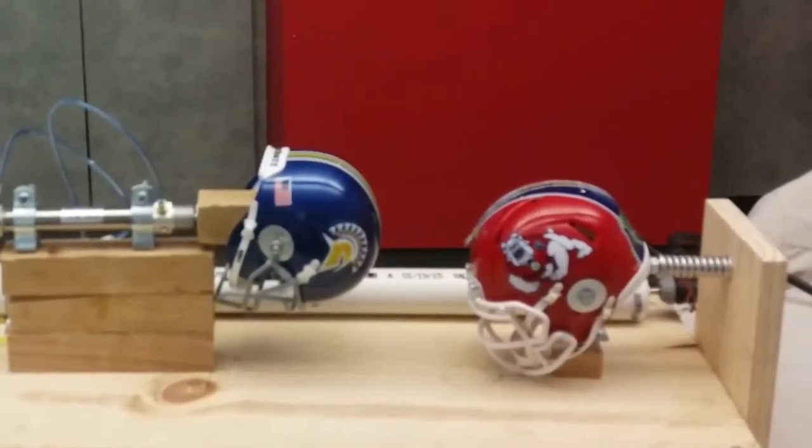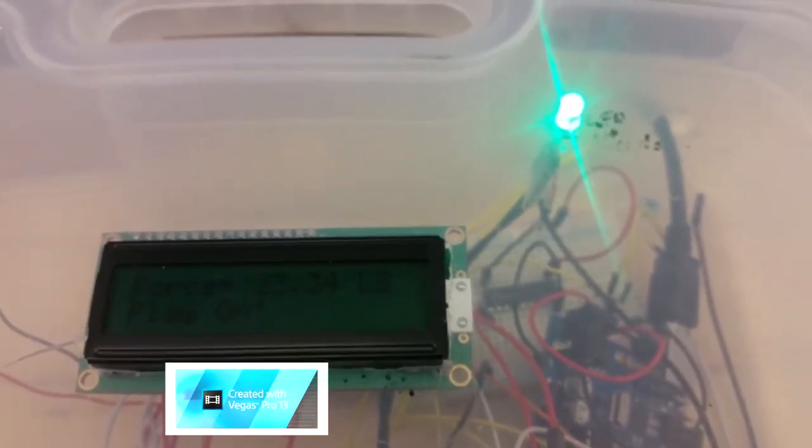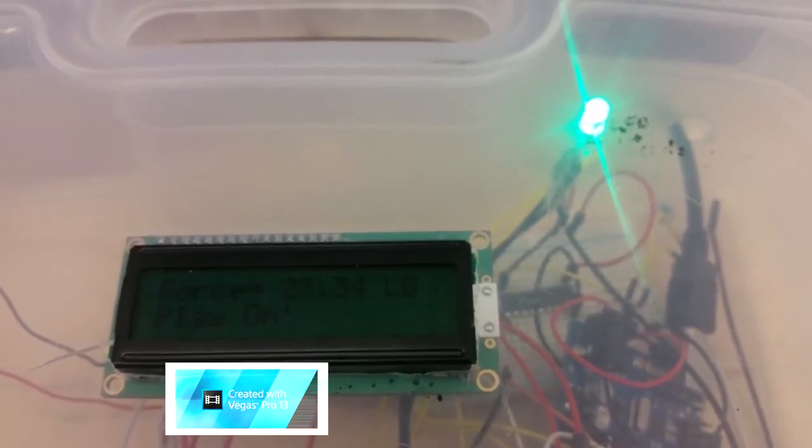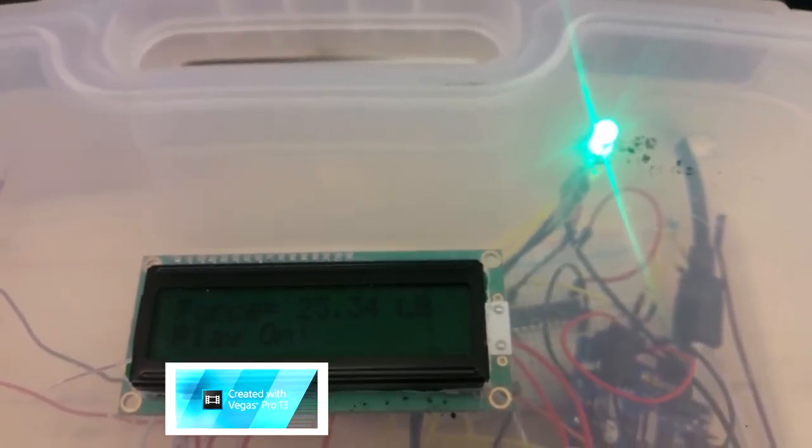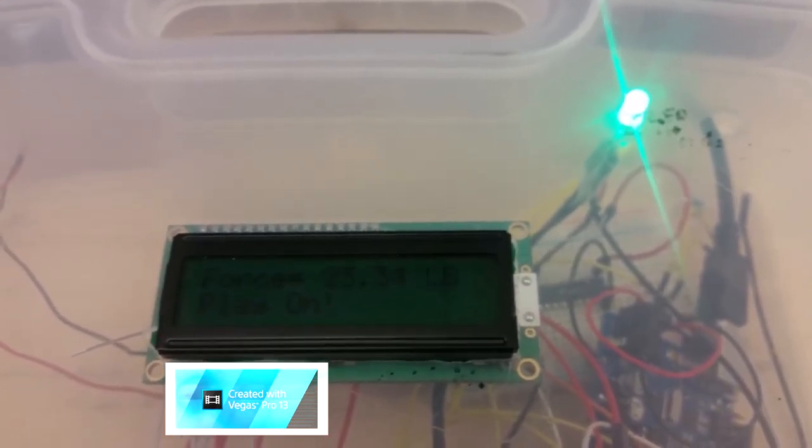Now we're going to do another simulation but at a lower pressure. Here you can see that the force display is 23.34 pound force, which is below our warning signal. As you can see displayed is play on.